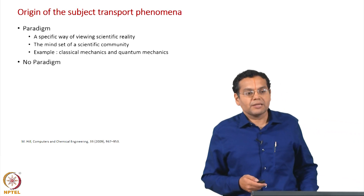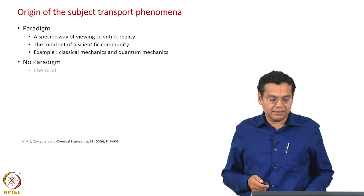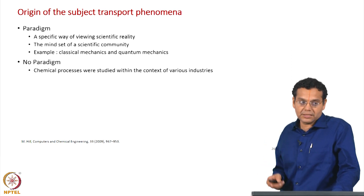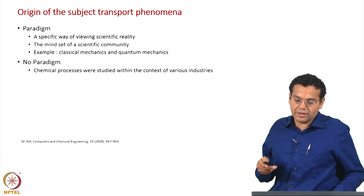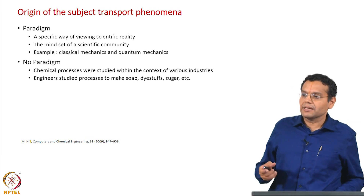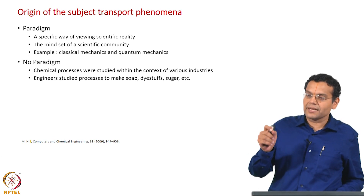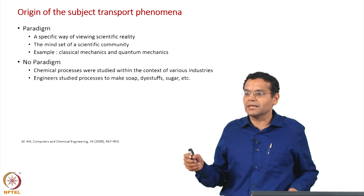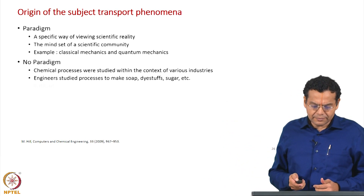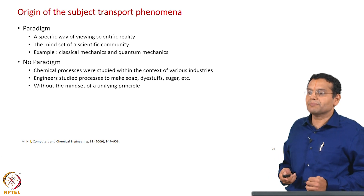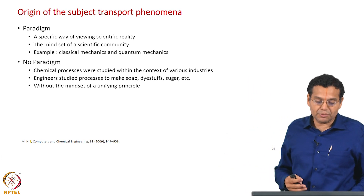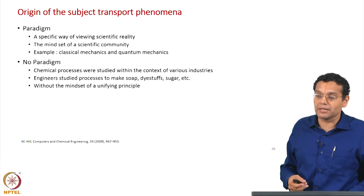To begin with, there was no paradigm in chemical engineering. Chemical processes were studied within the context of various industries — each industry was studied separately. Industries for manufacture of soap, dyestuffs, sugar, sulphuric acid, sodium hydroxide — every plant was studied separately, without the mindset of a unifying principle. Because there was no unifying mindset, we say there was no paradigm to begin with in chemical engineering.